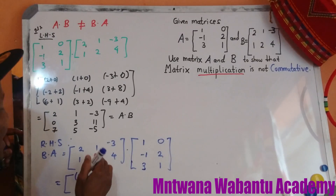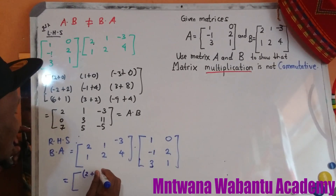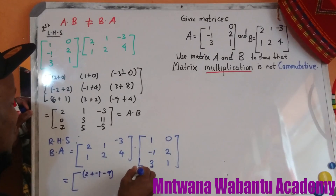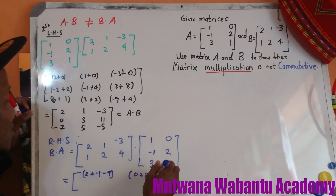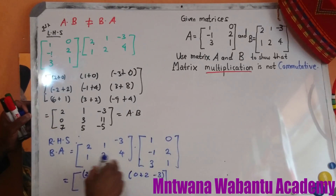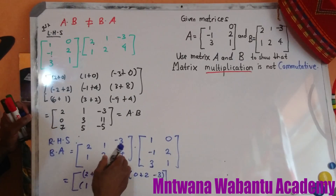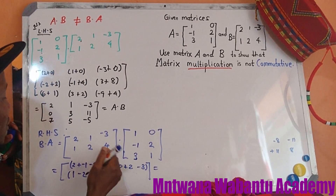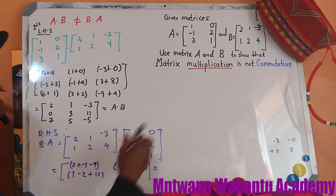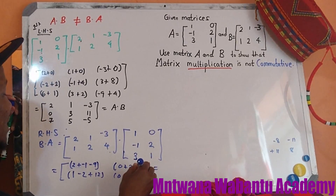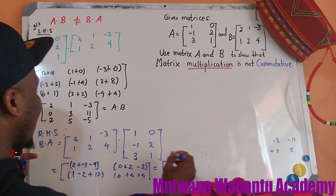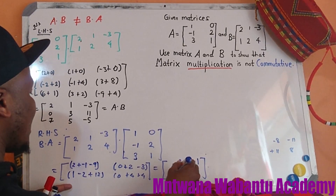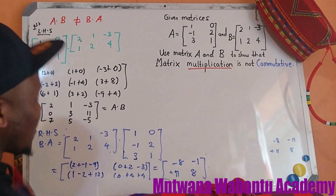So: 2 times 1 is 2, plus 1 times negative 1 is negative 1, plus negative 3 — that's negative 9. First row with the second column: 2 times 0 is 0, plus 1 times 2 is 2, plus negative 3 times 1 is negative 3. Second row with the first column: 1 times 1 is 1, plus 2 times negative 1 is negative 2, plus 4 times 3 is 12. Last entry: 1 times 0 is 0, plus 4 is 4. So B times A gives us: [negative 8, negative 1, / negative 1, negative 11, / 8].